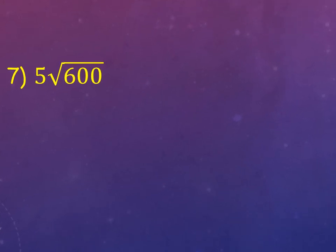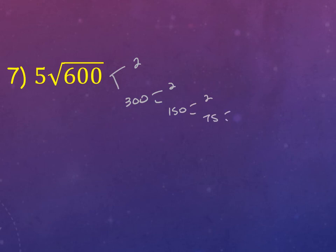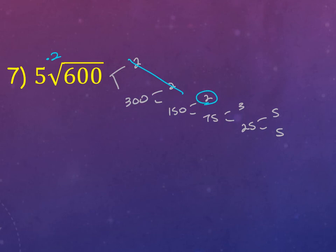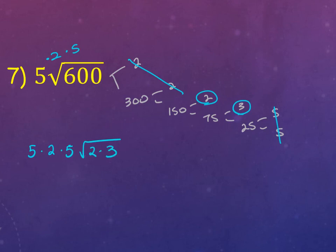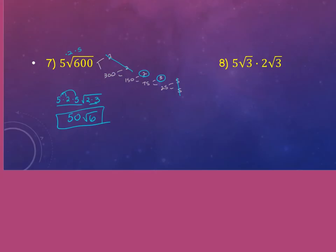Number 7: square root of 600. I'll break it down using 2s: 2 and 300, 2 and 150, 2 and 75, 3 and 25, 5 and 5. Now there are two 2s, so I bring a 2 to the outside — the single 2 stays underneath. Then there are two 5s, so I bring a 5 to the outside — the 3 stays underneath. So on the outside I have 5 times 2, and then times another 5 — that's 10 times 5, which is 50. On the inside I have 2 times 3. If you leave more than one number underneath, those get multiplied out too, so it's 50 square root 6.